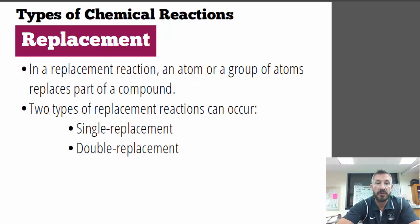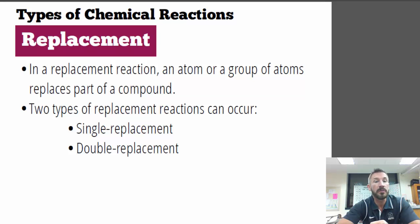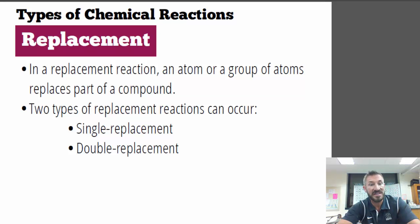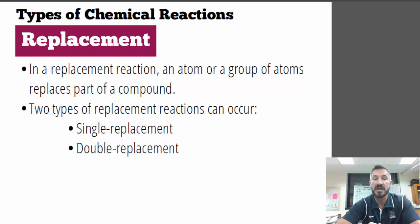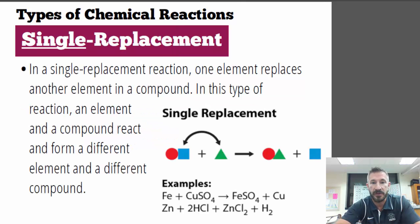The next type is called replacement — or single replacement or single displacement. In a replacement reaction, an atom or group of atoms replaces part of another compound. Two types of replacements can occur: single replacement and double replacement, also called single displacement and double displacement. Let's begin with single replacement.